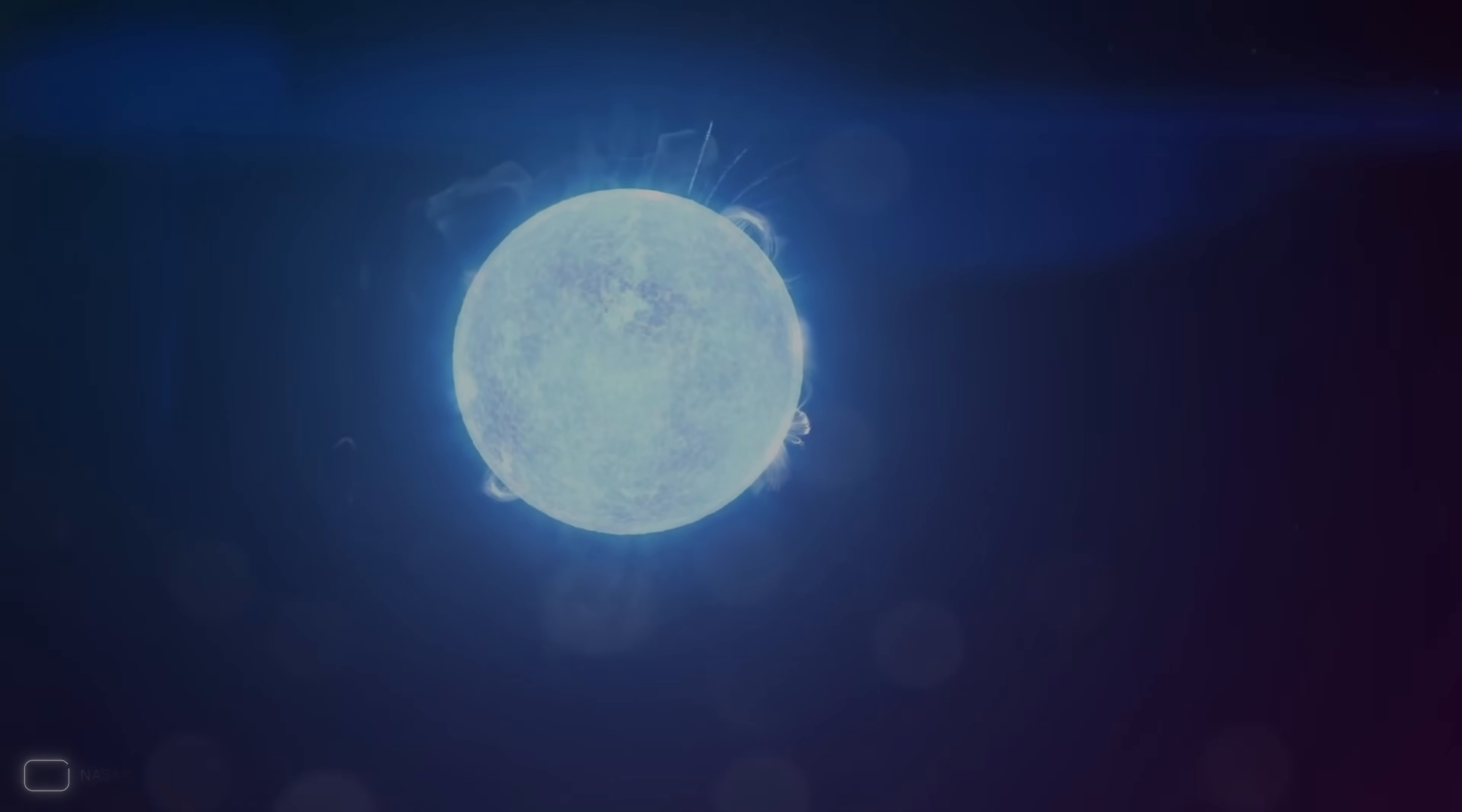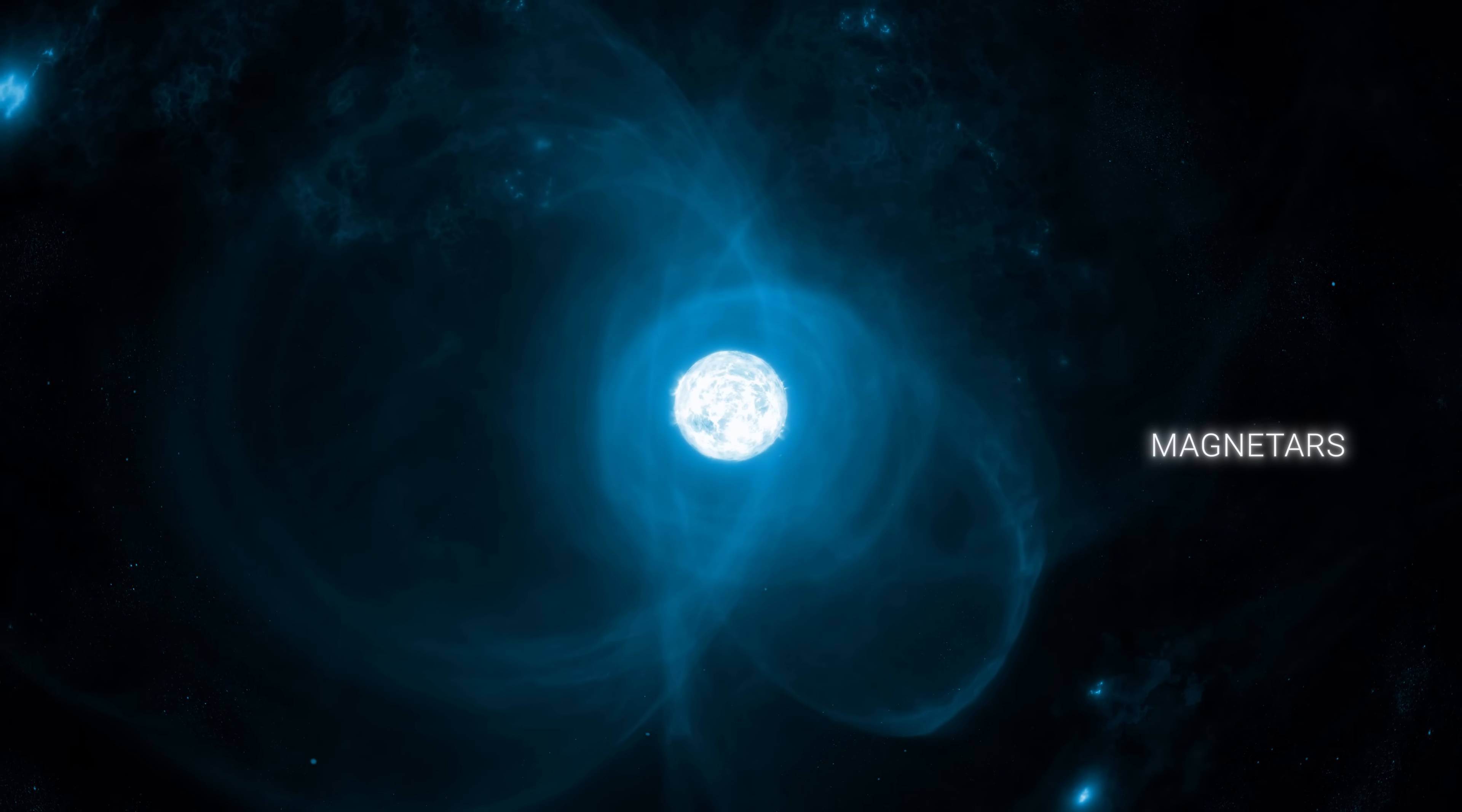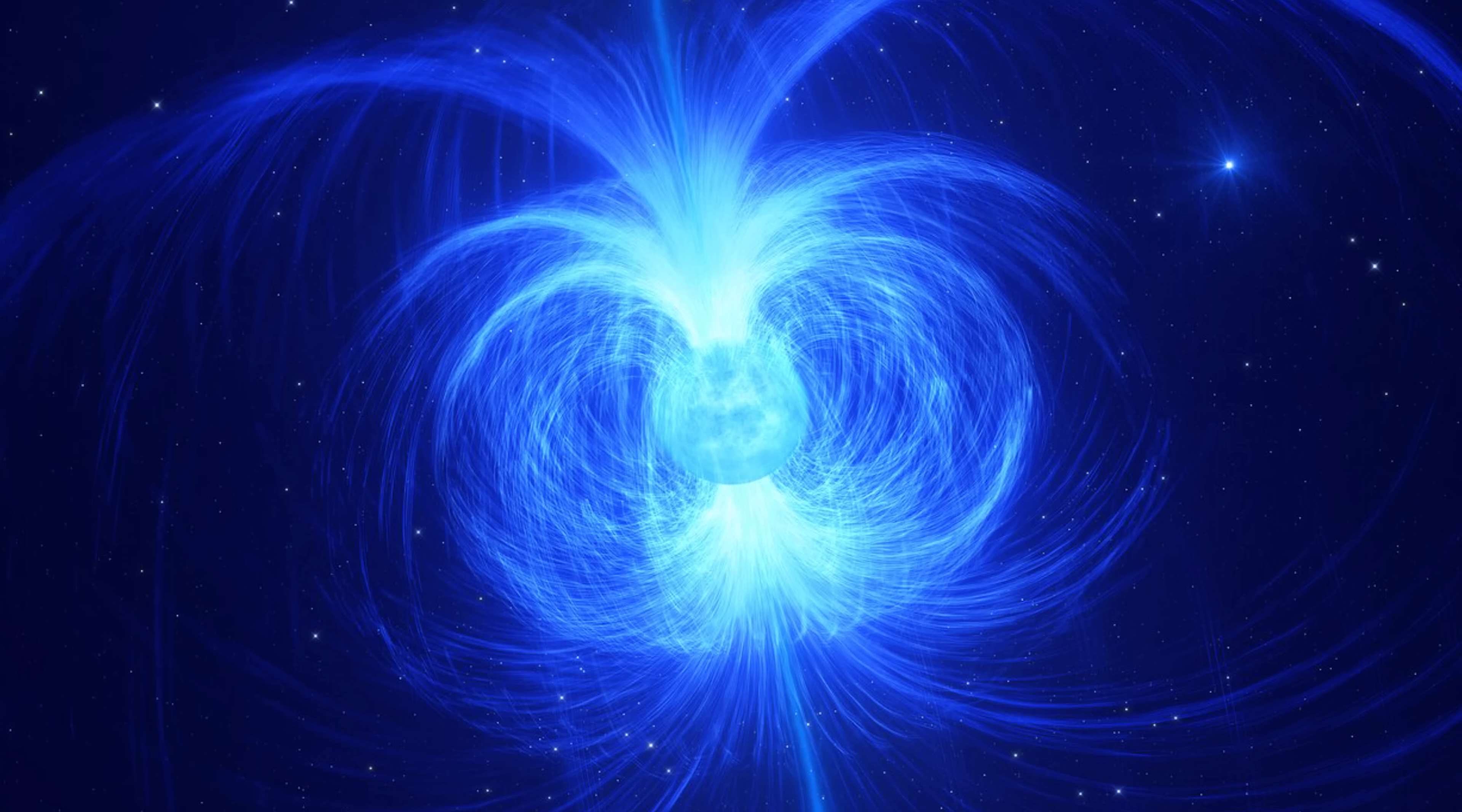While pulsars are often the first names on the list when it comes to cosmic radio signals, magnetars round out that very list. Magnetars are neutron stars that don't quite fit the pattern, with magnetic fields so strong they defy comprehension.